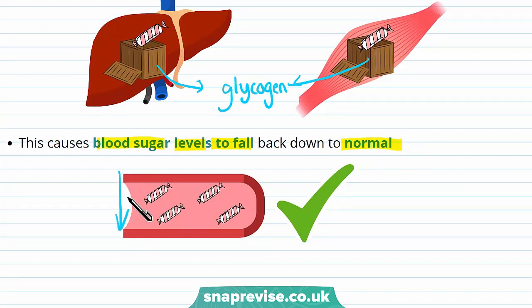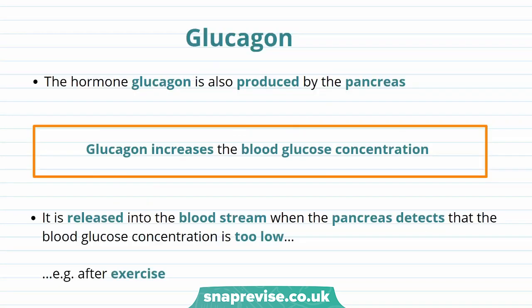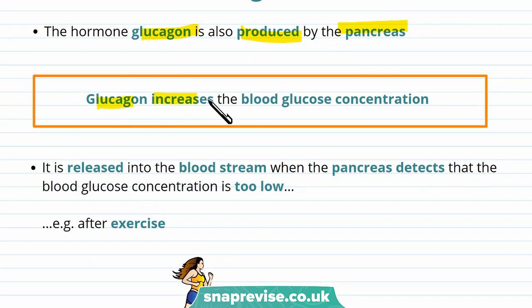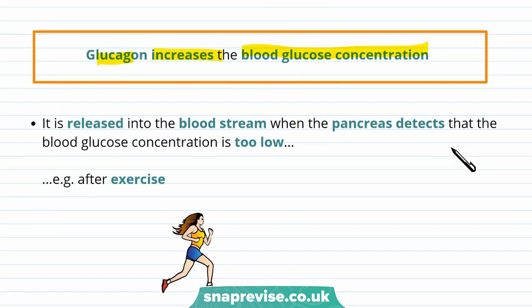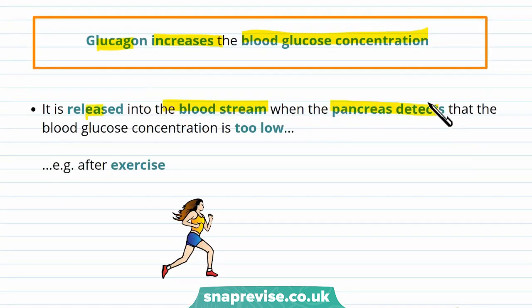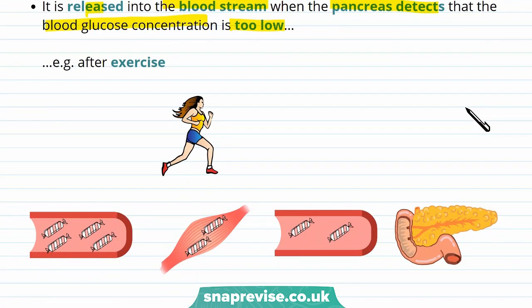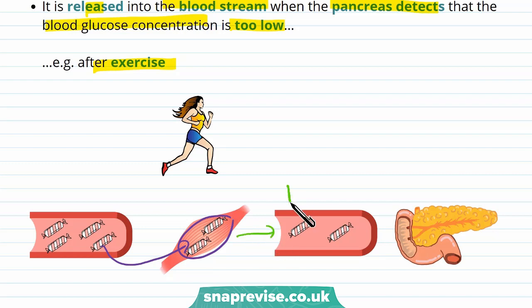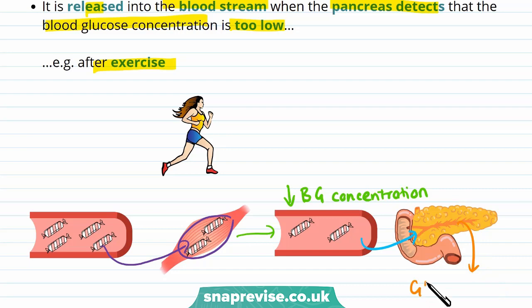And this is how your body keeps glucose levels constant. Now let's talk about another hormone — glucagon. Glucagon is also produced by the pancreas, and glucagon increases the blood glucose concentration. It's released into the bloodstream when the pancreas detects that the blood glucose concentration is too low. This may happen after exercise, when glucose is taken out of the bloodstream to be used in muscles for contraction, leading to a decrease in blood glucose concentration. The pancreas detects this low glucose concentration and produces glucagon as a response.